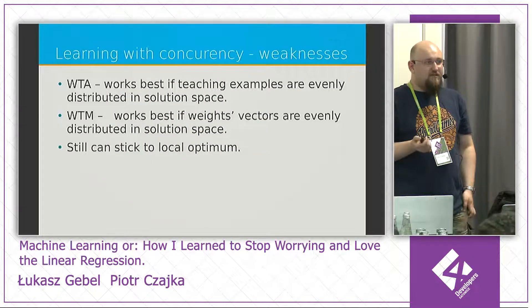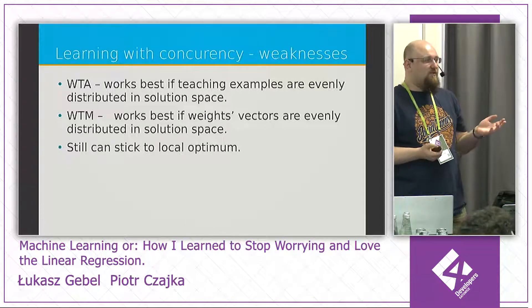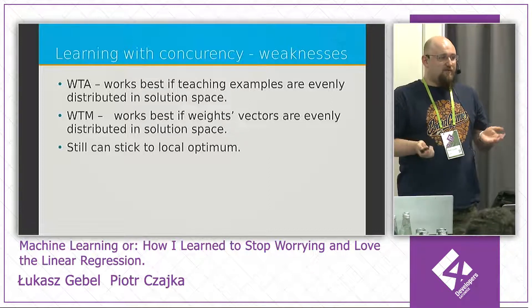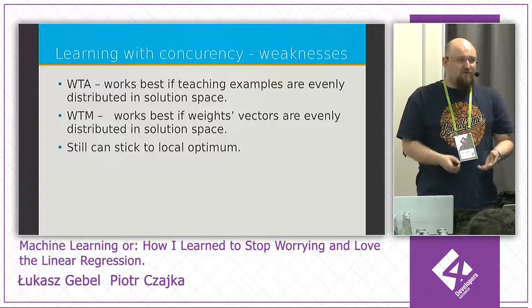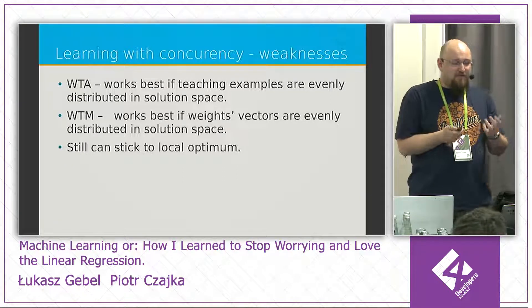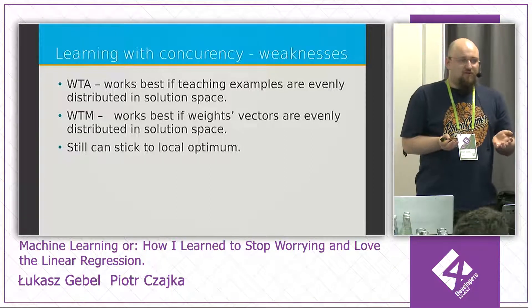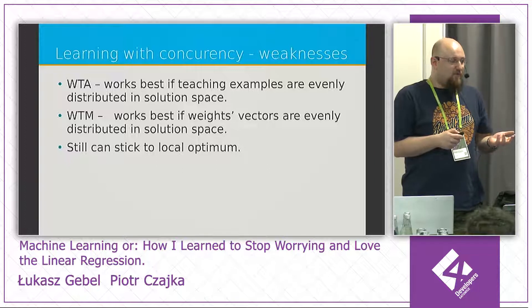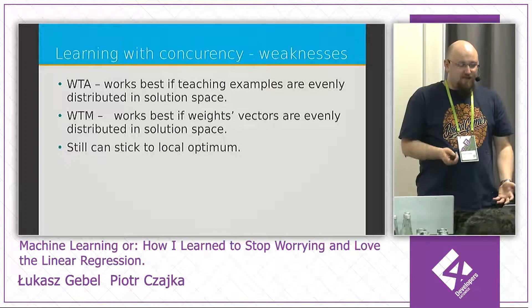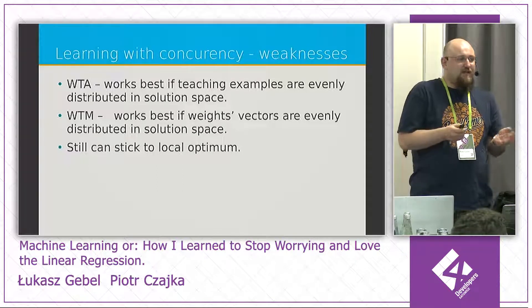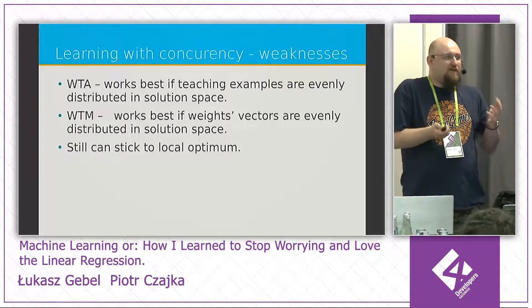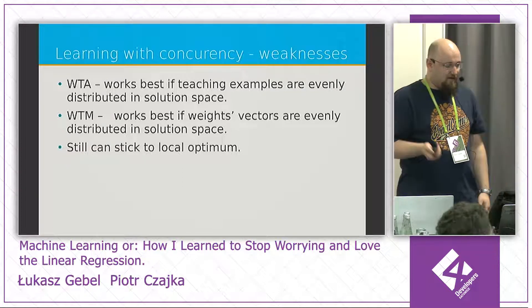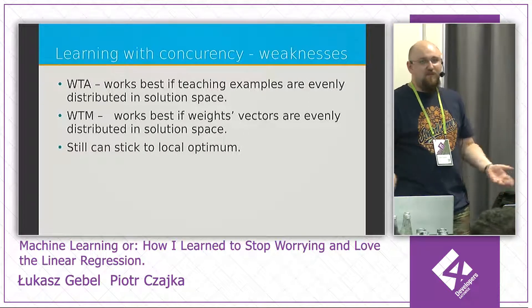About the strategies: in winner-takes-all, the problem occurs when all examples cluster in one place — then only one neuron reacts and becomes the representative for all examples, which is bad. You must think about spreading your examples well on the solution space. Winner-takes-most doesn't have that problem and works well in most situations, but works best when agents are well spread so they can roam around and find niches. If not well spread, they find groups but maybe not the best fit. And of course, sticking to a local optimum is a problem for every intelligent method.